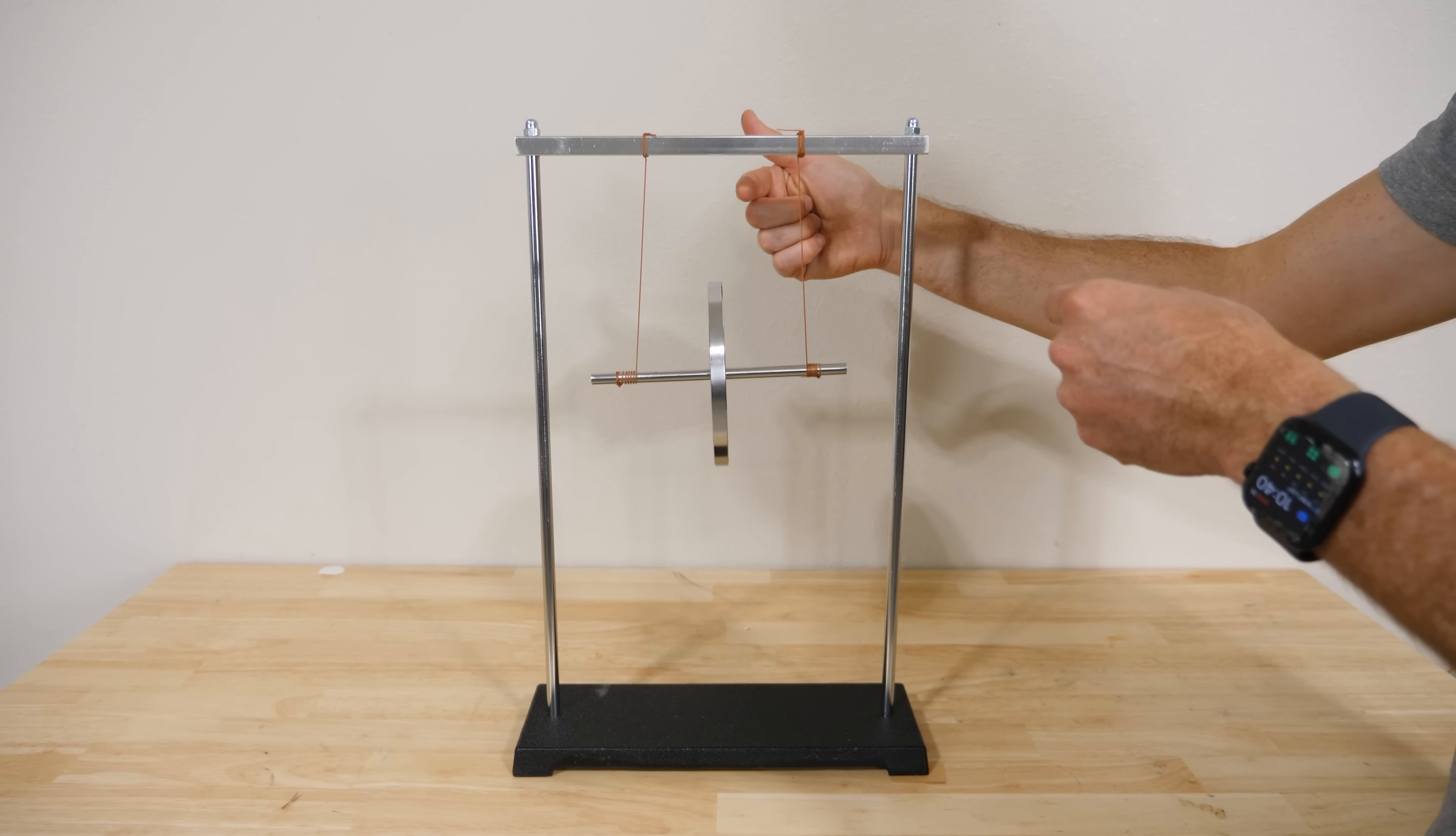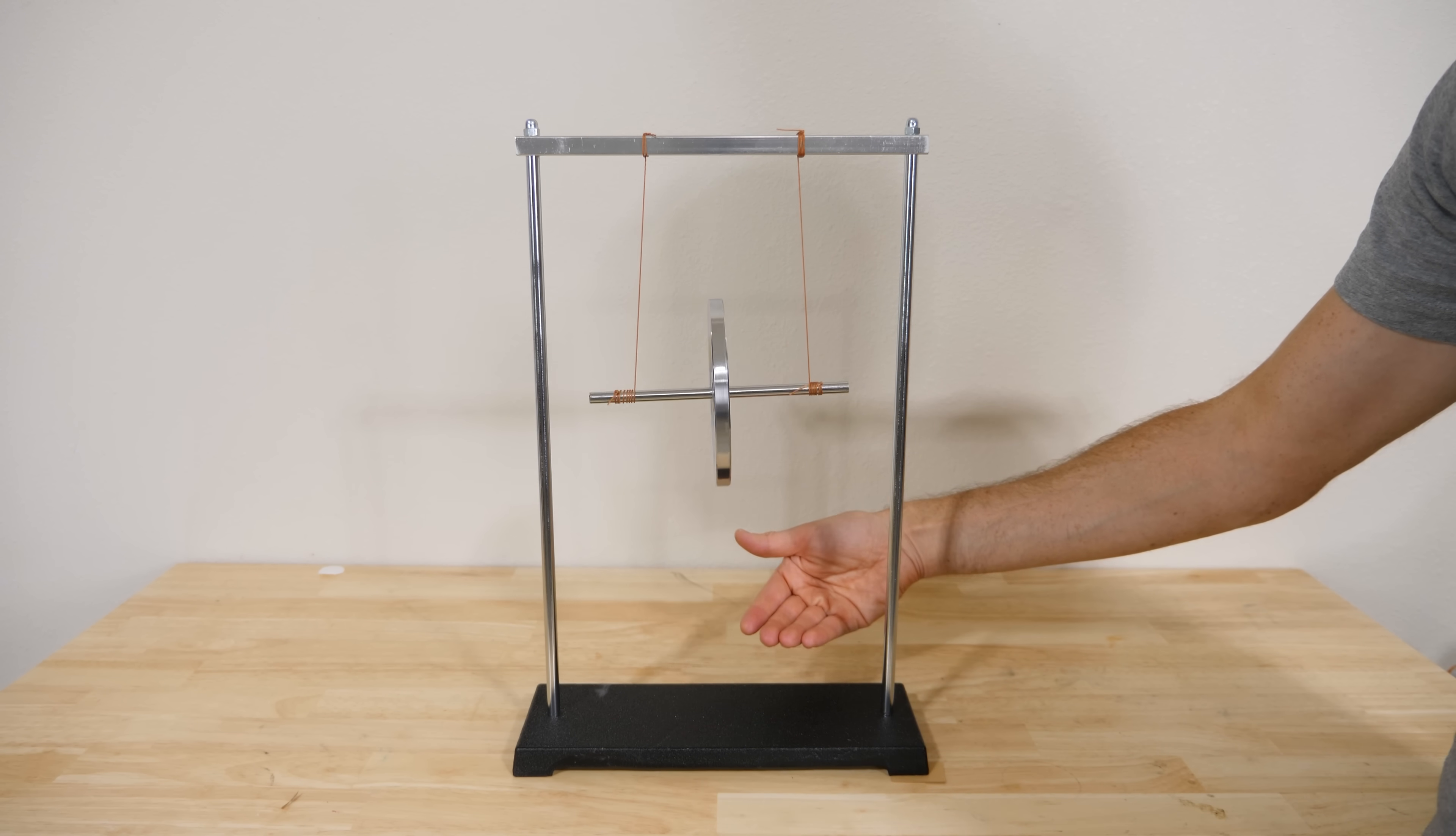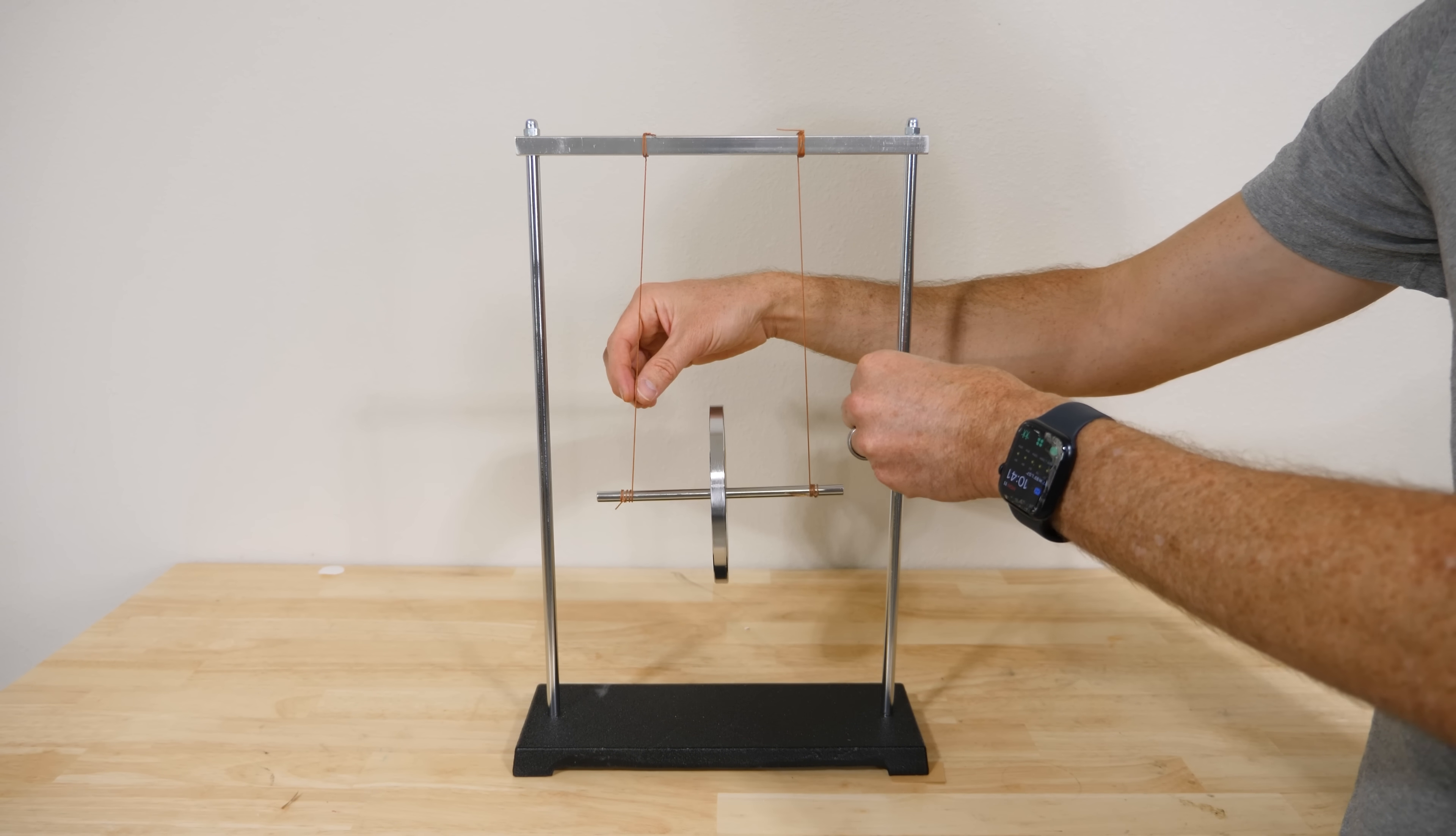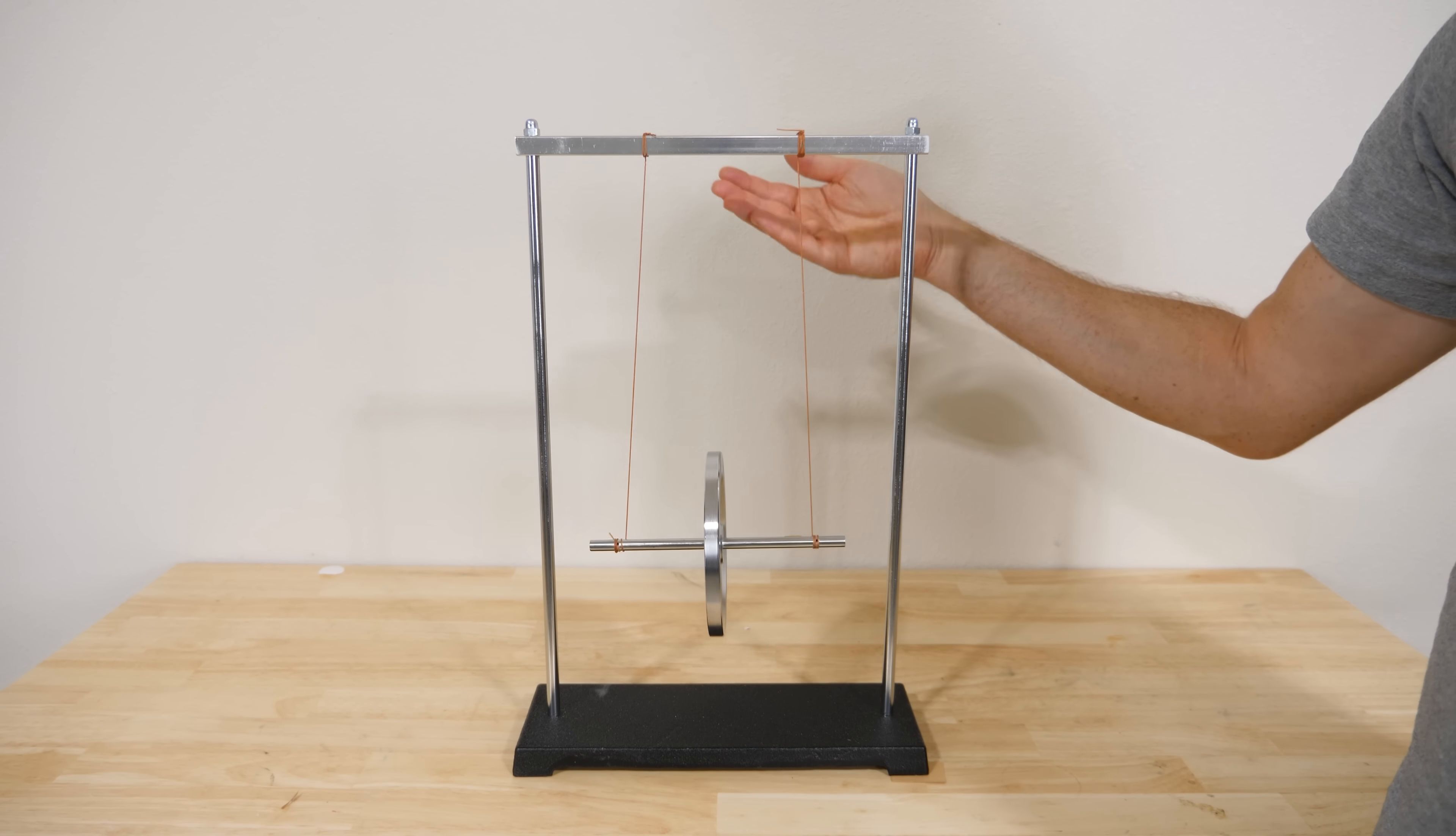So what's happening is the potential energy that it has to begin with gets converted into rotational energy, and as it unravels it goes faster and faster. Then it hits the bottom but it has a lot of rotational energy still, so it winds it back up and converts it back into potential energy at the top. The only reason it eventually stops is because some of the energy gets converted into frictional energy and heat and sound, so it loses some of that potential energy that it had to start with, so it never gets back up to the same spot that it was originally at.